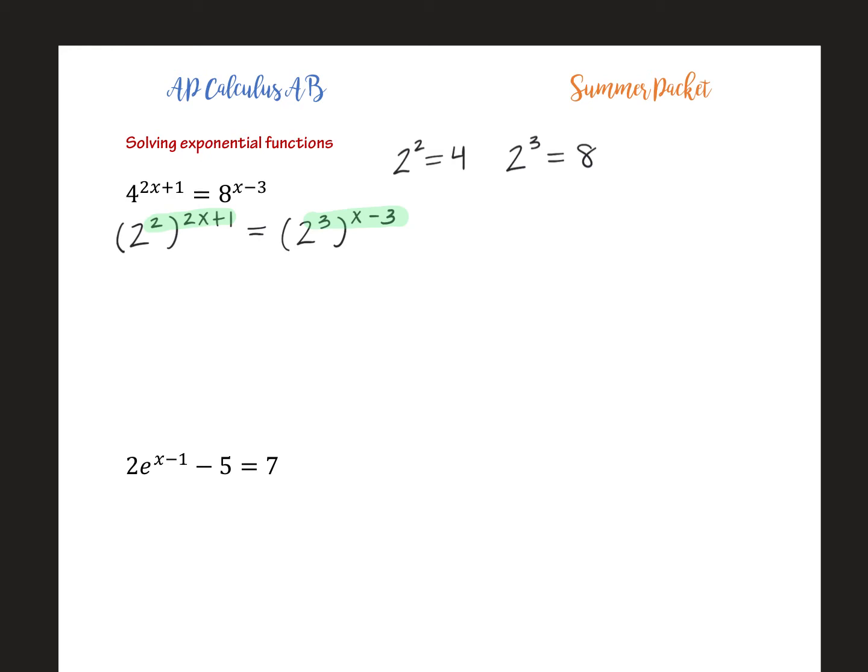So for us we get, and then if I distribute the, when you have a power raised to a power remember you're multiplying. So I'm going to distribute two times two X plus one is four X plus two. And then three times X minus three is three X minus nine. Then I'm going to subtract three X. I'm going to subtract two to find that X is negative 11.